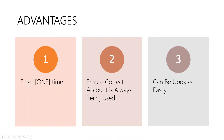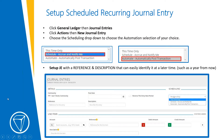To set up scheduled recurring journal entries in TOPS One, go to General Ledger in the menu on the left, click on Journal Entries, then click Actions at the top right and select New Journal Entry. This is the same as doing a regular journal entry, except we're going to schedule it. To schedule it, choose the Scheduling dropdown to choose your automation selection.